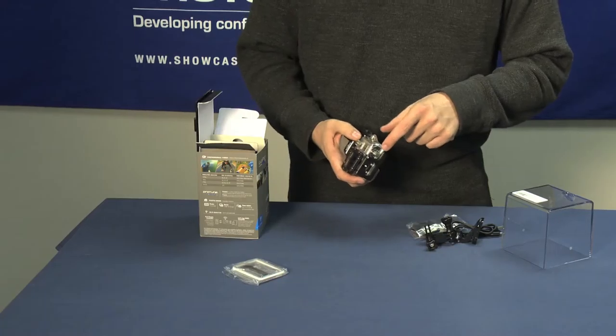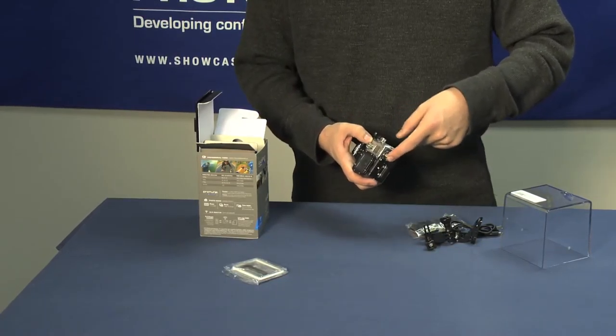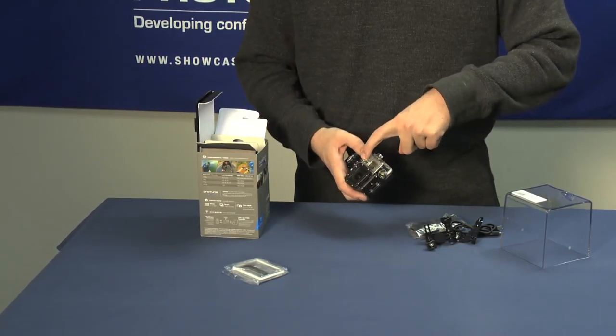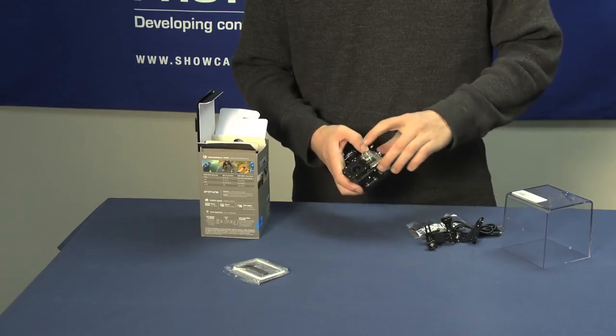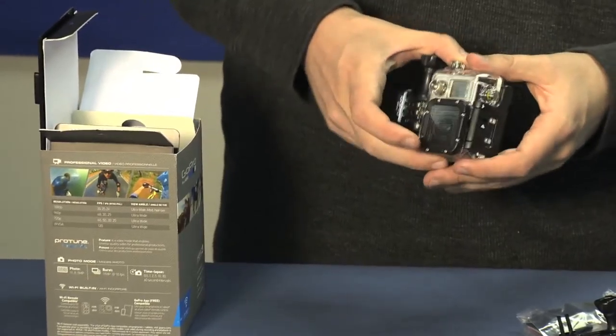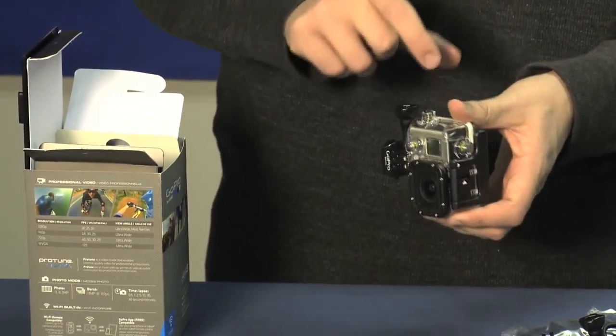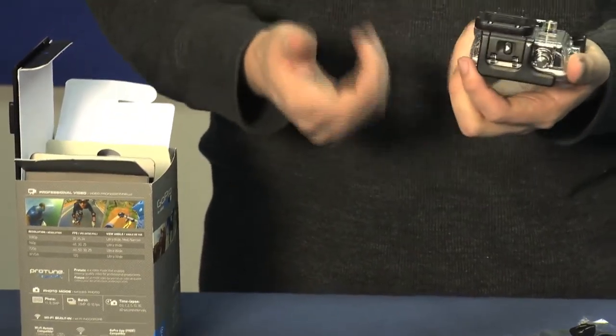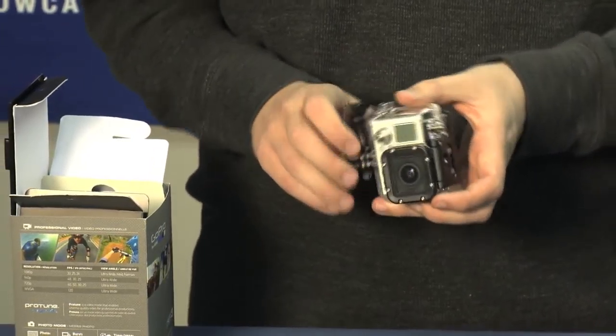From the outside of the housing, you can get at the record button, the wireless control button, and the mode button on the front here. All three of those are accessible through the case, underwater, while falling through the air, what have you. The only thing you can't do is get to the ports and SD card.